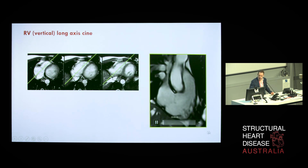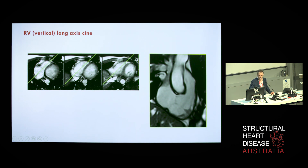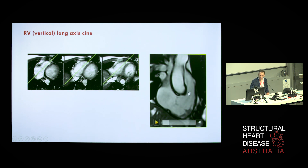From an axial set of slices, we take an oblique sagittal image that passes through the midpoint of the tricuspid valve approximately through the right ventricular apex. Appreciating that the RV apex, even in normal individuals, will wrap around the LV, it's difficult to achieve a plane passing through the true apex — so in this view it will be foreshortened. But you can immediately appreciate the anatomy that defines the right ventricle in terms of its inflow and outflow.